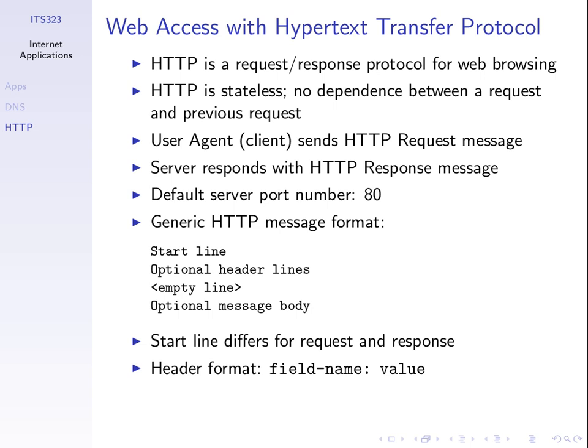HTTP request and response messages have the same general structure — they are just textual messages. Both have a start line that differs depending on the type of message, some optional header lines giving extra information, then an empty line, and optionally a message body. In responses the message body is the content that was requested — the web page. Header lines in both requests and responses have the structure of a field name and some value.